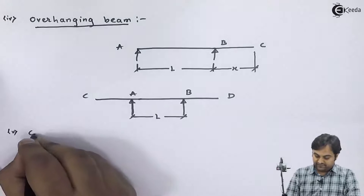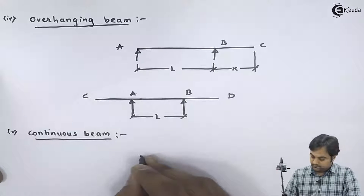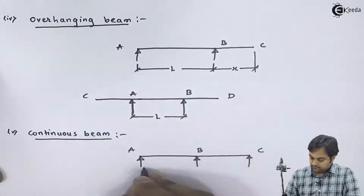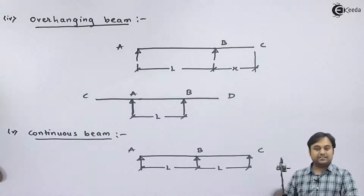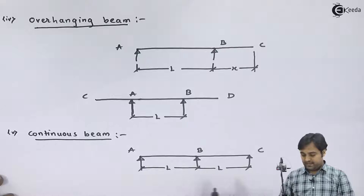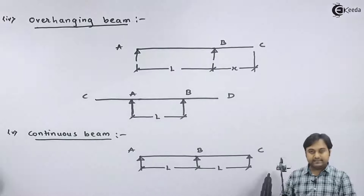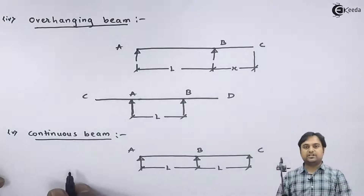Next we have the continuous beam. A beam which has more than two supports is called a continuous beam. It is similar to a simply supported beam, but apart from support at the ends, it has some additional support in between — anywhere from A to C. Such a beam is a continuous beam.